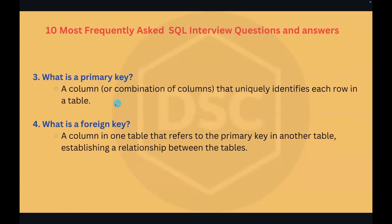Question number three: what is the primary key? A primary key is a unique identifier for a record in a database table. It ensures that no two rows have the same value in the specified column or columns, and it prevents null values.